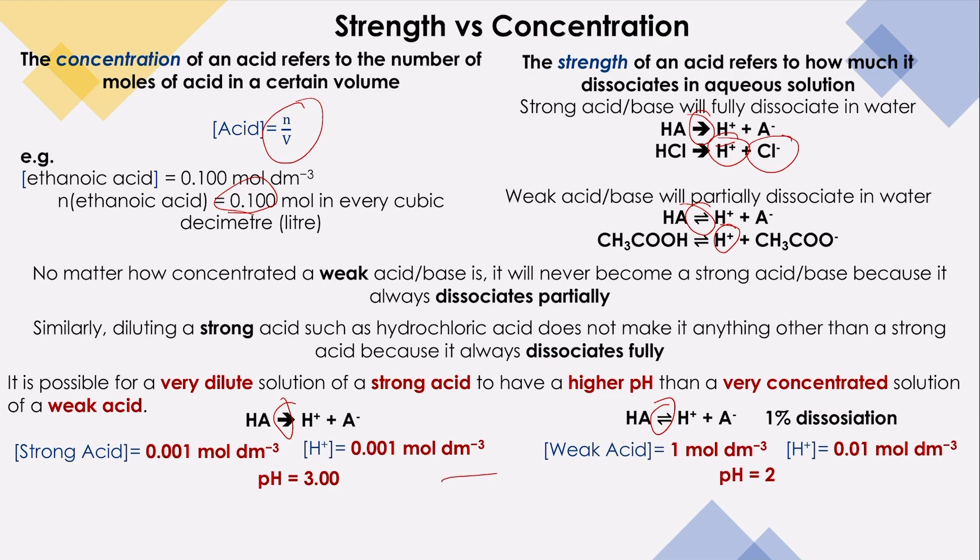So can you see here the difference? Yes. The weak acid has a lower pH. Why is that? Because the weak acid is very concentrated and the strong acid is very diluted.